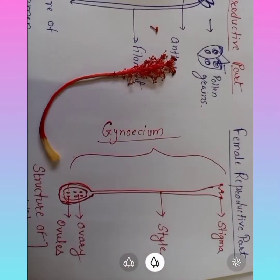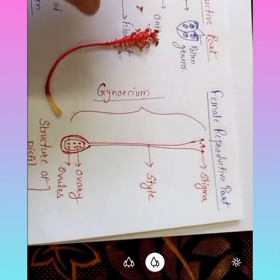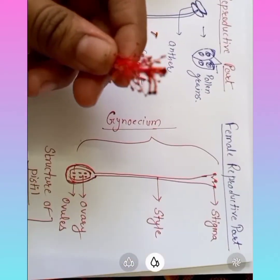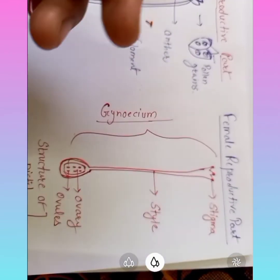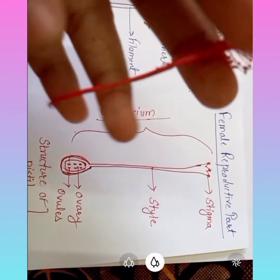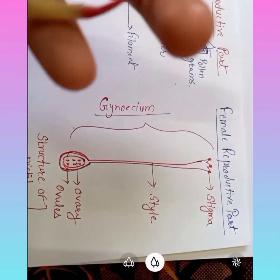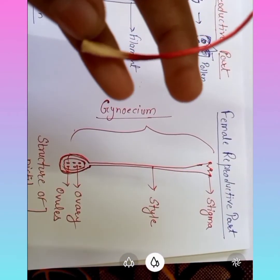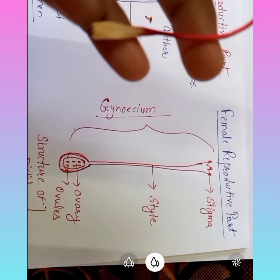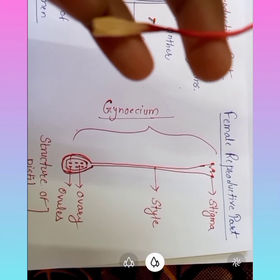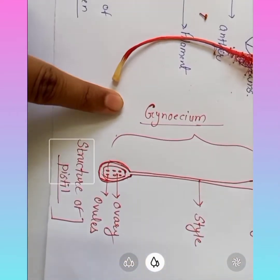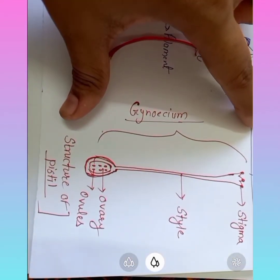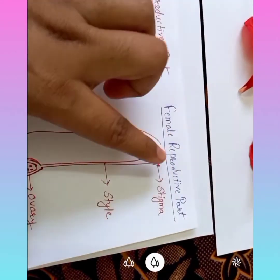Now let's look at the female reproductive part. You can see the umbrella-like structure — that is the stigma. The long tube-like structure below it is the style. And at the base you can see the ovary, where the ovules are formed. This total structure is called the gynoecium, and altogether it is referred to as the pistil — the female reproductive part of the flower.